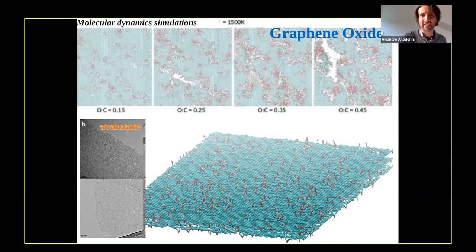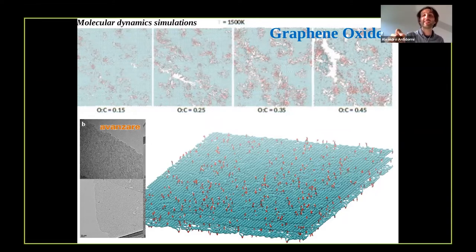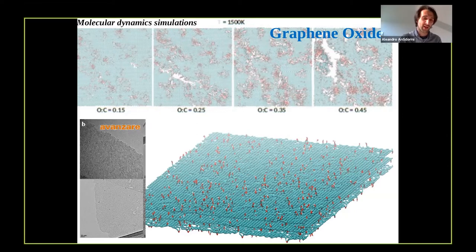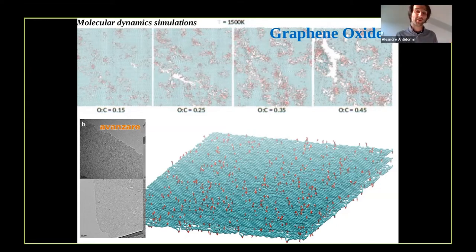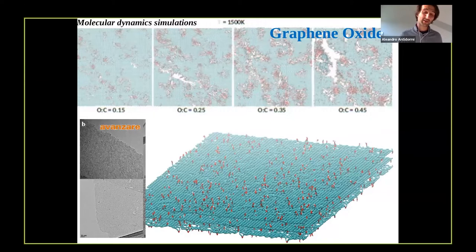These are snapshots from our atomistic simulations of graphene oxide, where we simulated the thermal annealing and reduction process of graphene oxide starting with different initial oxygen concentrations. This is a very complex material, which always needs to be compared with real samples. Within our group, a strong collaboration with the Spanish company Avanzar has been useful in making the atomistic samples as close as possible to reality.